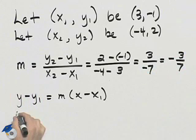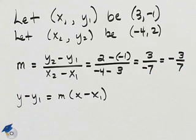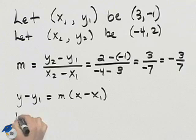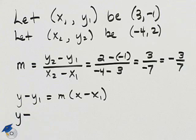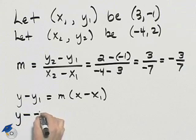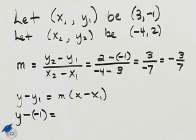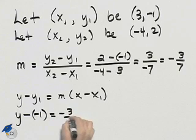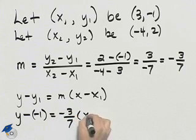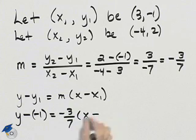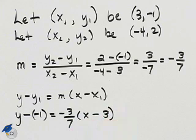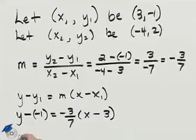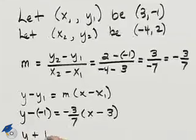Now I can evaluate this using the point-slope form of the equation of a line. y sub 1 is negative 1, m is negative 3 sevenths, x sub 1 is 3. I will simplify a bit on the left-hand side.